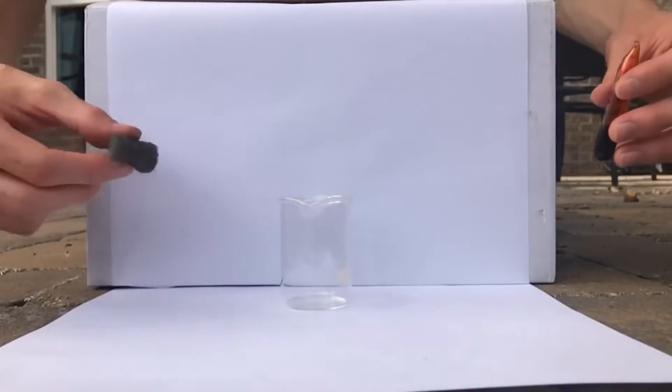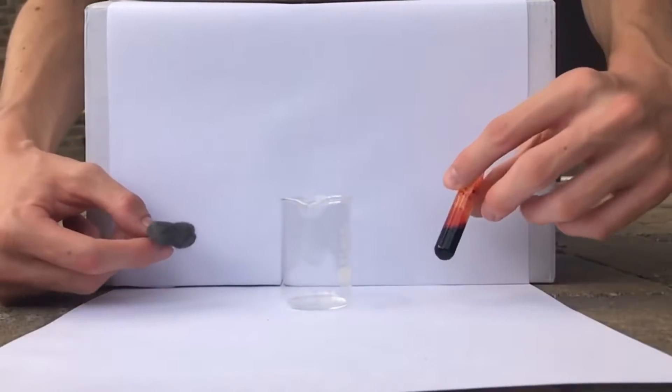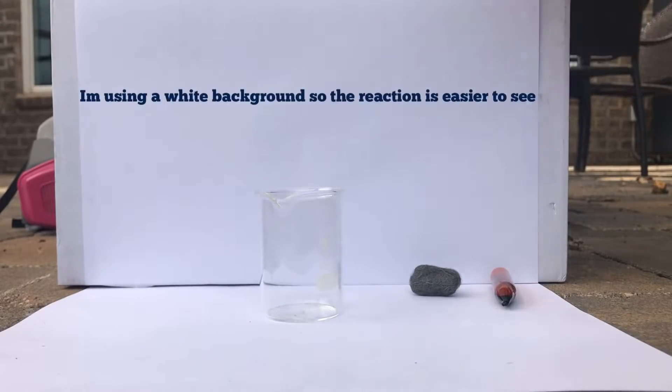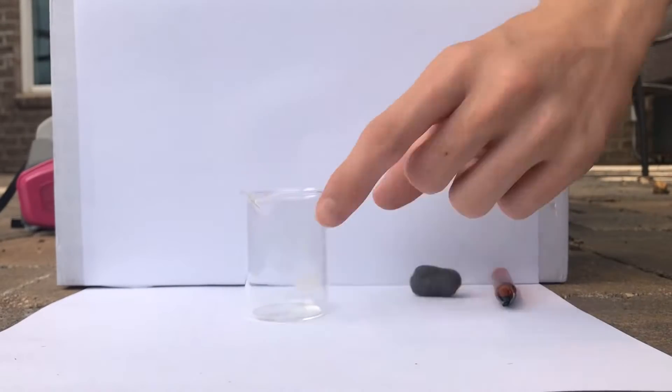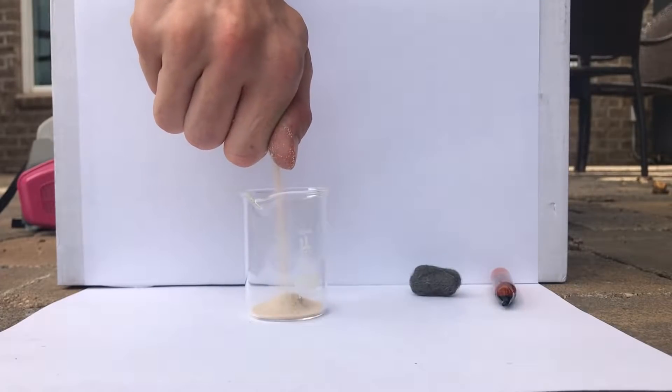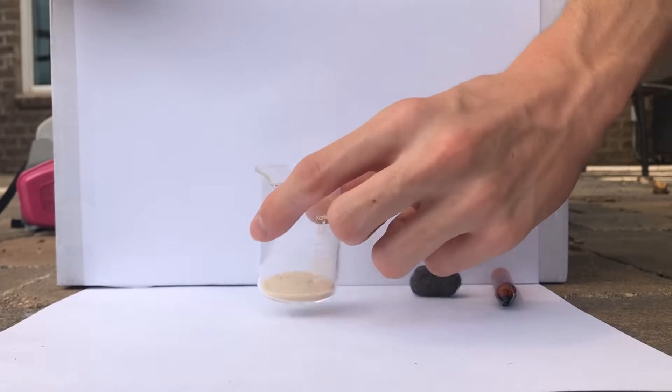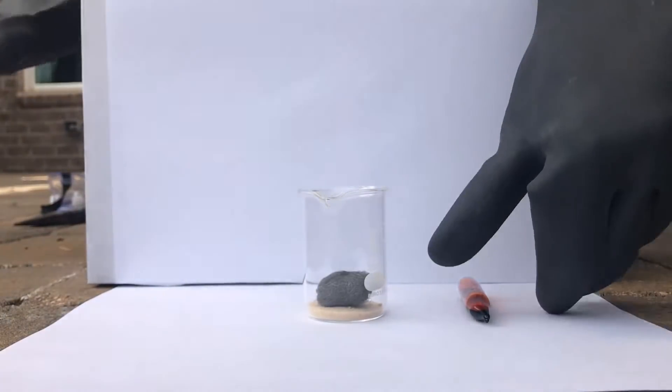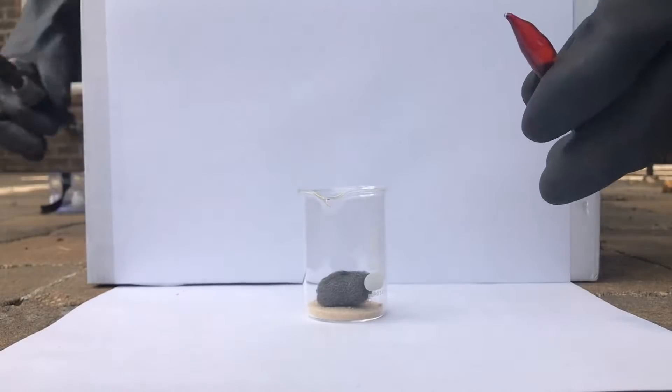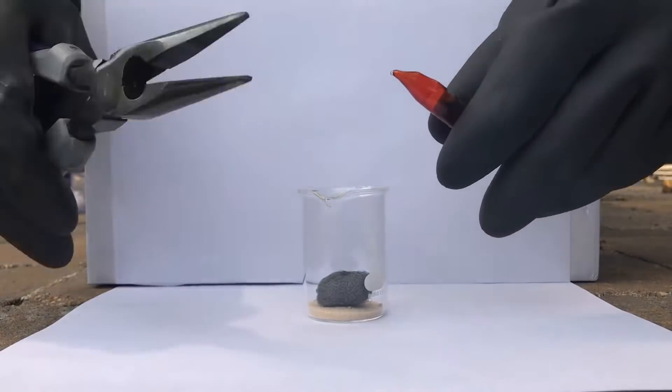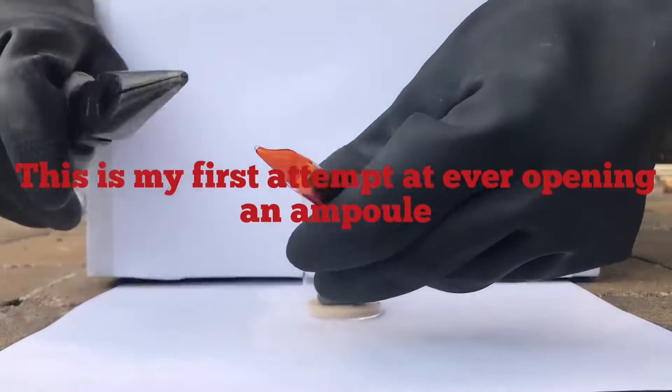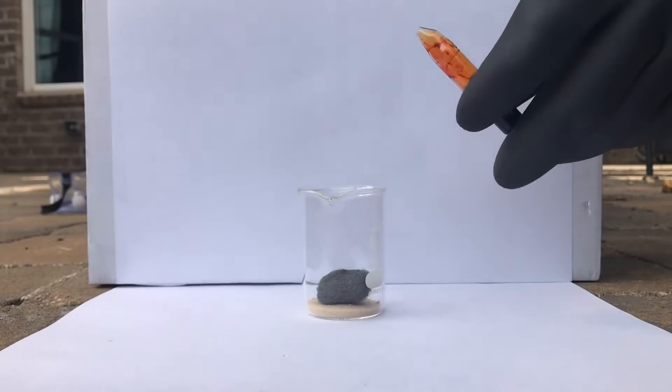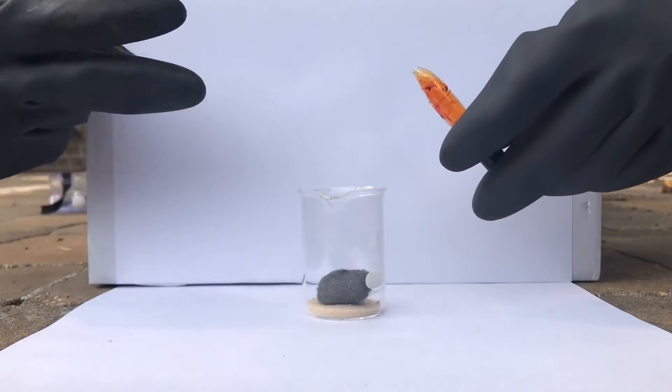Our first reaction is going to be steel wool with liquid bromine. So in order to make sure that the beaker doesn't crack at the bottom, I'm going to put in some play sand. Alright, there we go. So first we're going to put in the steel wool, and then we'll open up our bromine. Ready? Three, two, one.